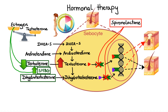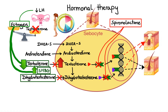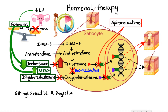Firstly, the estrogen component of hormonal contraceptives works to boost levels of sex hormone-binding globulin, thereby decreasing levels of free testosterone. Secondly, oral contraceptives suppress luteinizing hormone production by the pituitary gland, which in turn decreases androgen synthesis by the ovaries. And lastly, oral contraceptives inhibit 5-alpha reductase, which is the enzyme responsible for the conversion of testosterone to the most potent and active androgen, dihydrotestosterone. The most commonly used oral contraceptives have low doses of synthetic estrogen, ethinyl estradiol, combined with differing progestin components. Because synthetic progestins have androgenic activity that may exacerbate or trigger acne, it is prudent to select an oral contraceptive that contains a progestin with low androgenic properties, such as norgestimate or desogestrel.